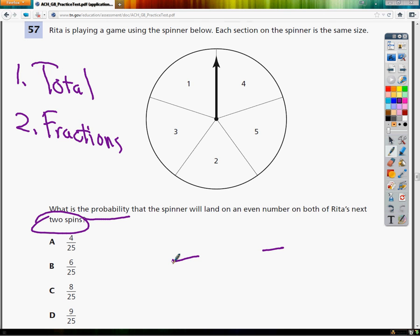Now I need to find the total, which would be the total number of sections here. There appears to be five because the biggest number is five and you can count that there's five there. We're assuming she can't land on the line or any of that weirdness, there's some tiebreaker scenario.